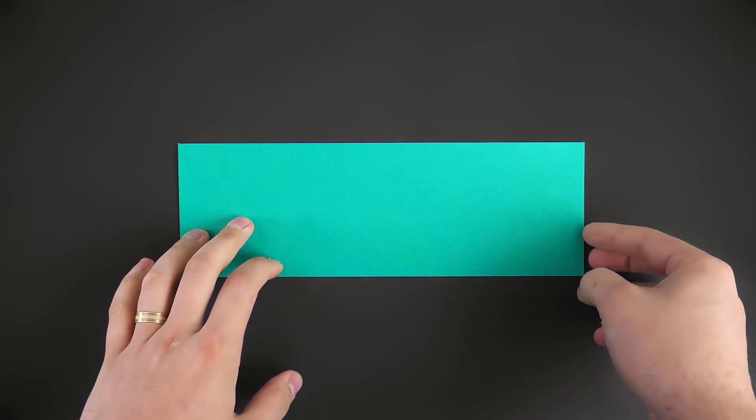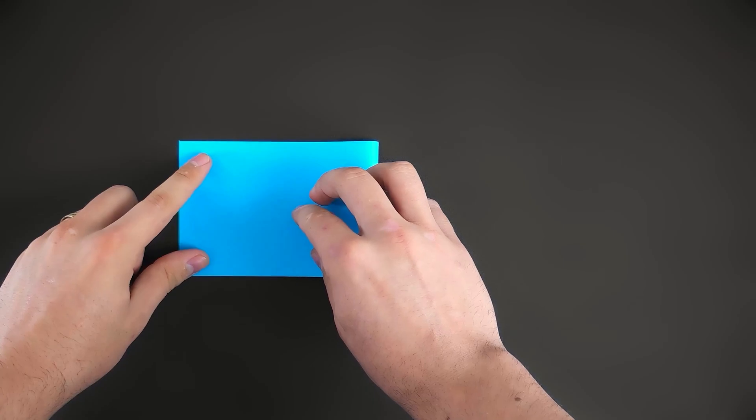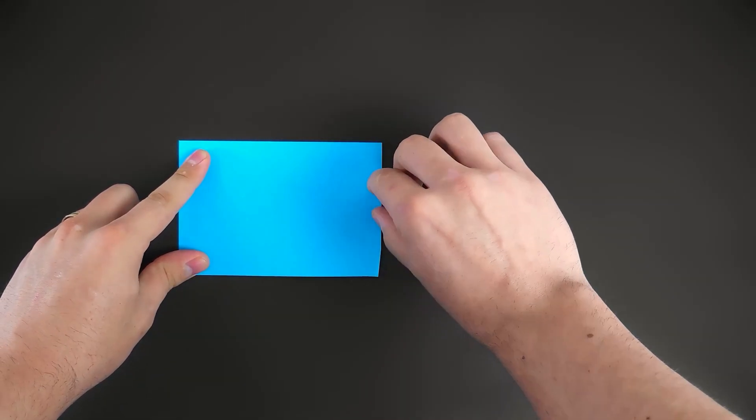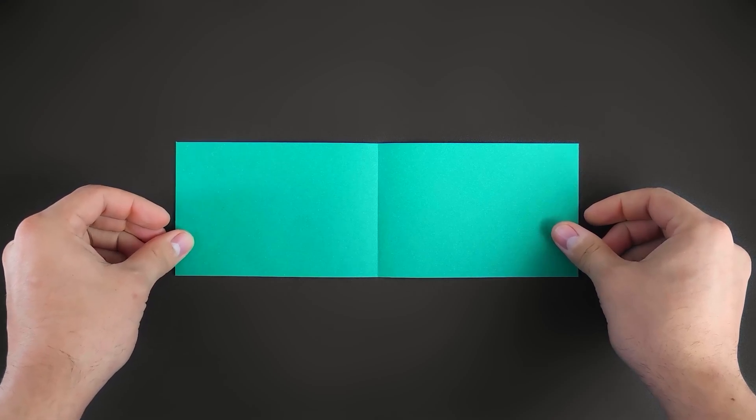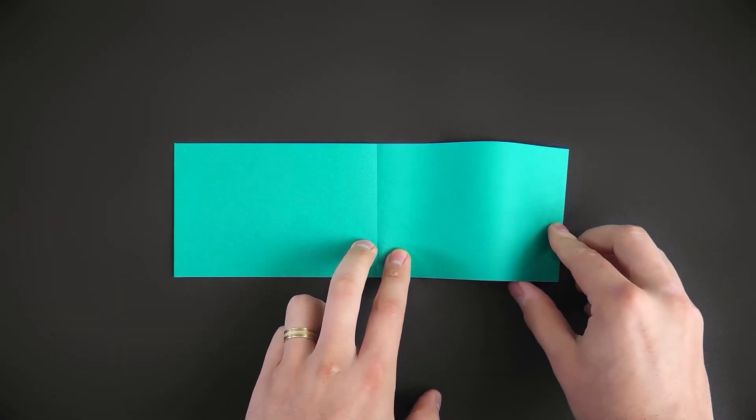Our first step is to divide this rectangle into 16 parts. To do that, we start by folding it in half, divide it into 2, then we fold both sides to the middle, divide it into 4.